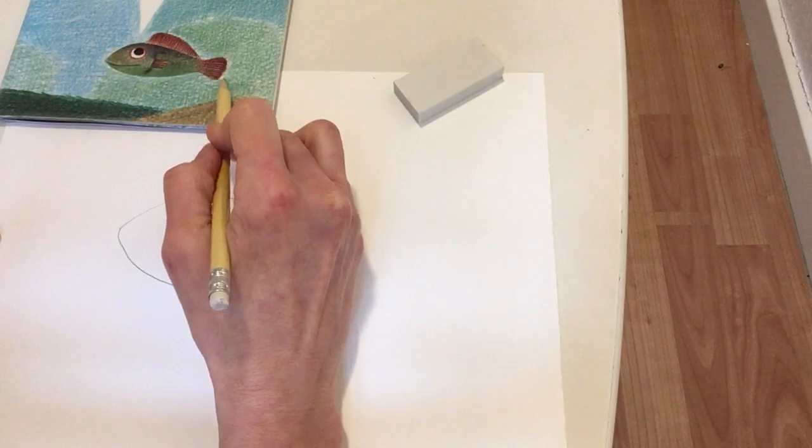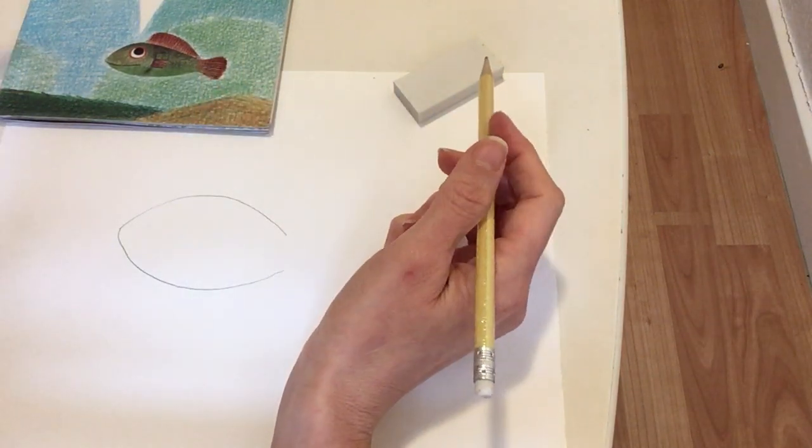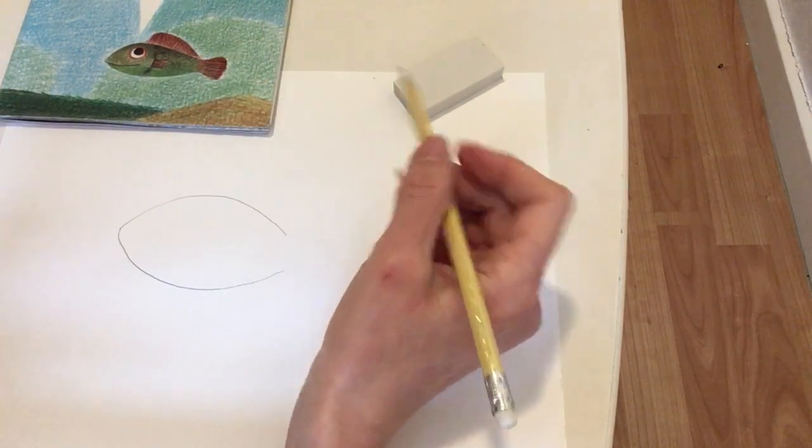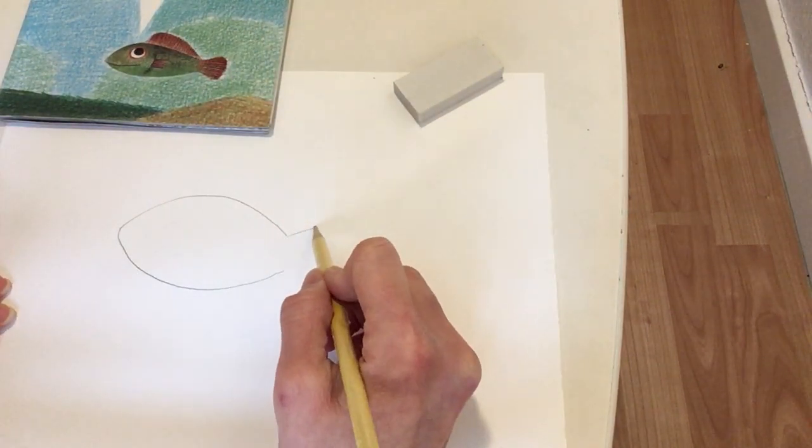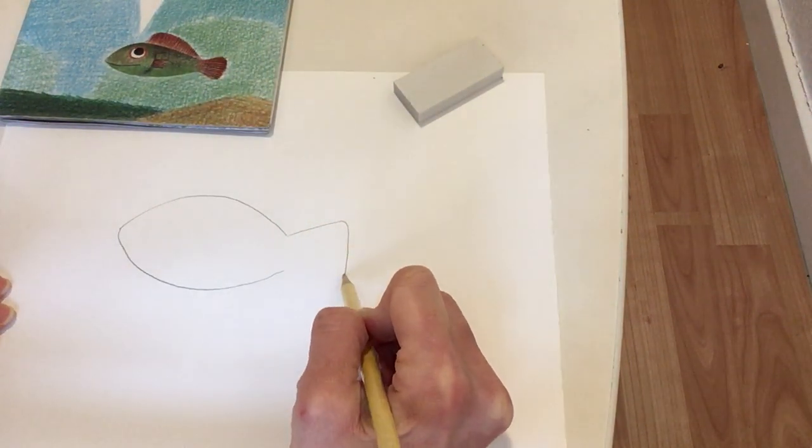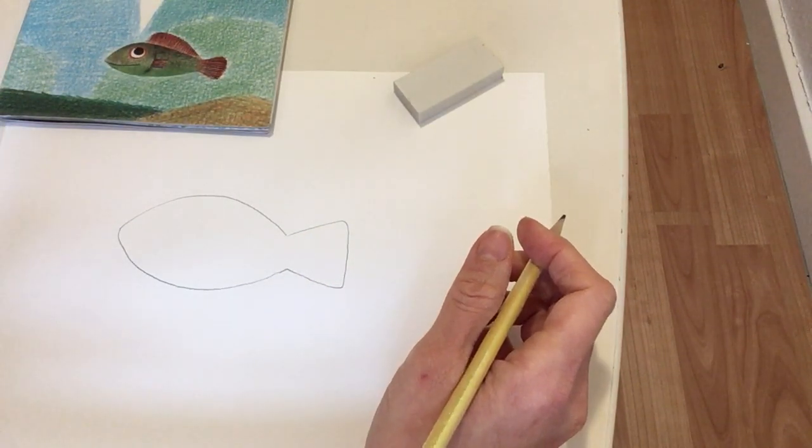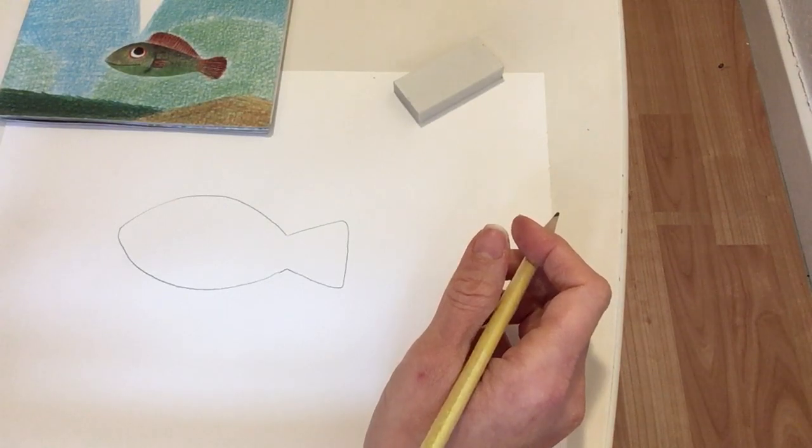Now, what shape does his tail look like? It's kind of like a triangle. It's not pointy here, but this shape is kind of like a triangle. So we're going to add that at the end of the body. Now, already it's looking like a fish and I bet you all could do that. So it's not so hard, right?